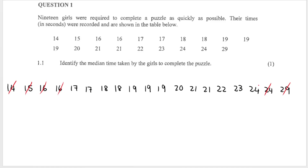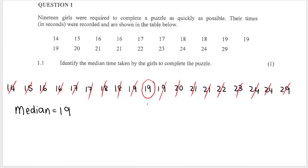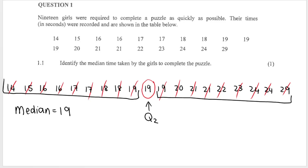We do another two from each side, continuing until we get to the one in the middle. That means the median time taken by the girls is 19 seconds. Remember, the median is also known as Q2, and it divides the data set into a lower half and an upper half, which we'll get to later.